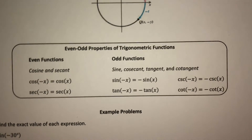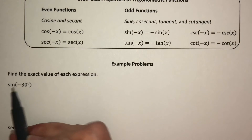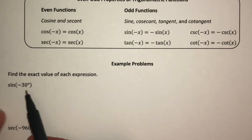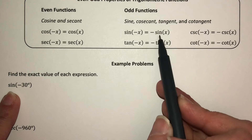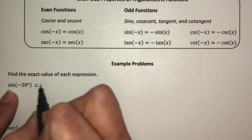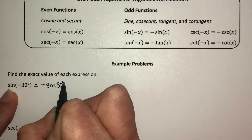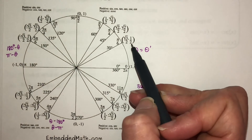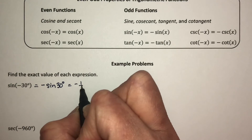Let's find the exact value of sine of negative 30 degrees. Since sine is an odd function, sine of negative 30 degrees equals negative sine of 30 degrees. Sine of 30 degrees is 1/2, so the answer is negative 1/2.